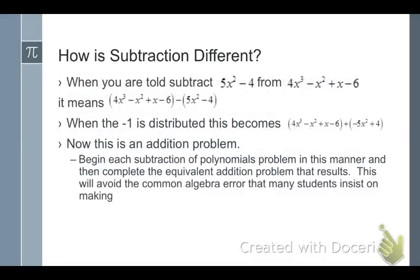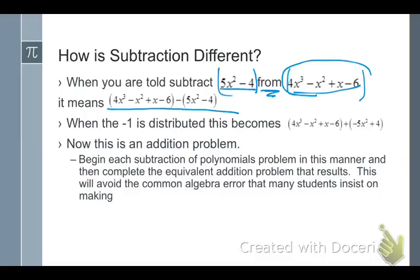So if I'm told to subtract 5x squared minus 4 from 4x cubed, you get to decide which goes first. Well, you start with this one. I'm taking 5x squared minus 4 away from what I started with. So that looks like that. So you have to recognize what to do with that word if your problem is presented that way. And notice I put parentheses around each of my polynomials. Because if I don't put those parentheses, I will only subtract the 5x squared. I will not subtract the negative 4.